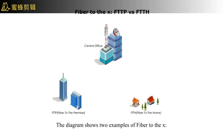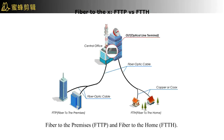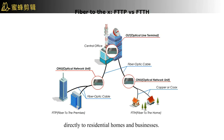The diagram shows two examples of fiber-to-the-X: fiber-to-premises and fiber-to-home. They use fiber to provide high-speed internet access from a central office directly to residential homes and businesses.